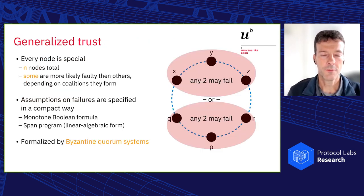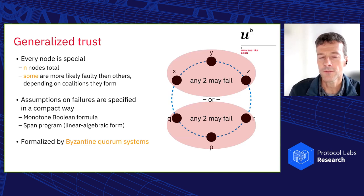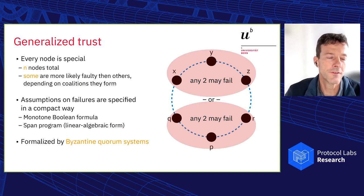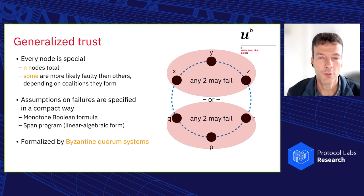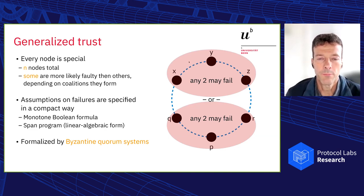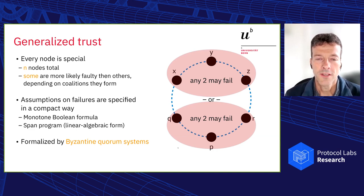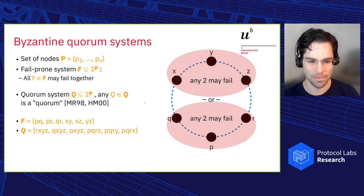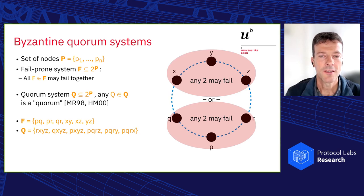We can generalize this. This has been done a long time ago, namely that they take the view that every node is special. Why should one node here fail as often as the other node? Why should we trust this node more than the other node? This is indeed the picture that I show you here on the right, where we could say, of these six nodes, remember before there were seven, of these six nodes, there are two groups, the XYZ group and the PQR group on the lower half. This is indeed the core system here, is what formalized this idea, namely that we specify a so-called fail-prone system.